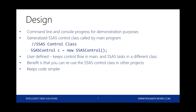Continuing with design: there's command-line and console progress. In my example today I use the command line to feed variables into the application, controlling which server I'm connecting to and which cube I'm using. I'm also going to write progress messages to the console. What's nice with C-Sharp is you can create your own logging — output to a log file or a SQL table. For custom code like this, especially when your environment changes, having that output data for troubleshooting is really helpful.